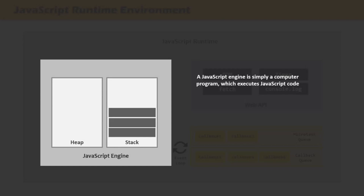The heart of any JavaScript runtime is always a JavaScript engine. Without a JavaScript engine, there is no way to run and execute JavaScript code whether you are using it in the browser or in the Node.js environment. A JavaScript engine is simply a computer program which executes JavaScript code. The main job of the JavaScript engine is to execute JavaScript code.